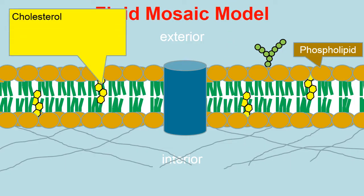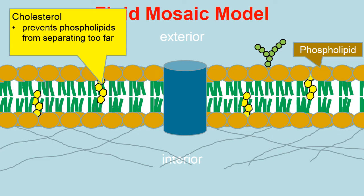We also see yellow geometric-shaped structures embedded within the tails of the phospholipids — these are cholesterol molecules. Cholesterol plays a very important role: it helps to prevent the phospholipids from separating too far from one another, keeping the cell membrane compact and bound together and giving it flexibility. So cholesterol plays a really important role in the overall health and function of the plasma membrane.